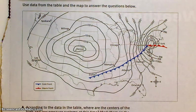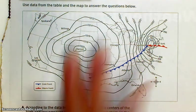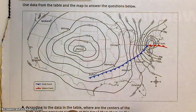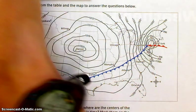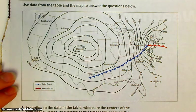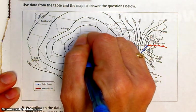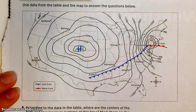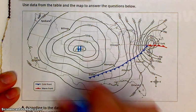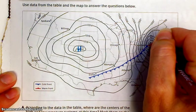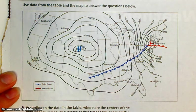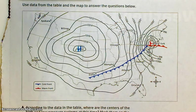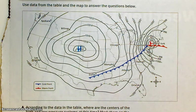You can't really see the questions. I'd rather you look at the map. According to the data in the table, where are the centers of the high and low pressure systems at this time? Well, I think when we looked at the table, we made a pretty good guess. We've got a high pressure center over here near Denver, so I'm going to mark it with a blue H. And over here by New York City, we've got a low pressure center, so I'm going to mark it with a red L.